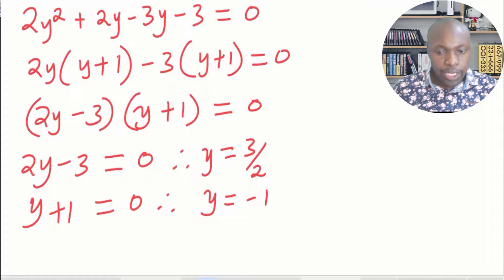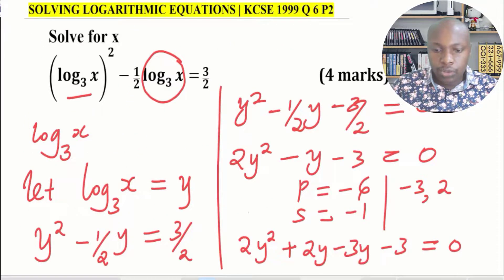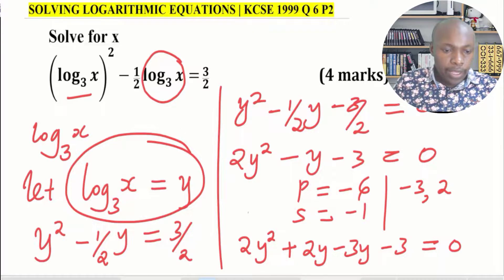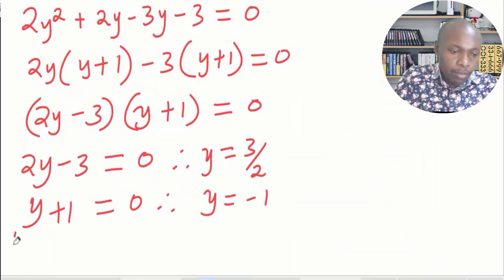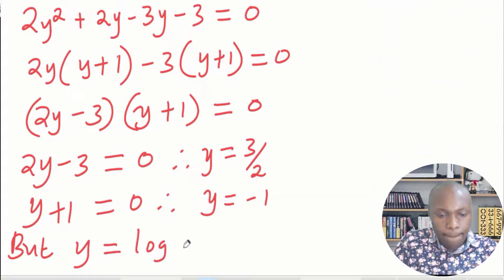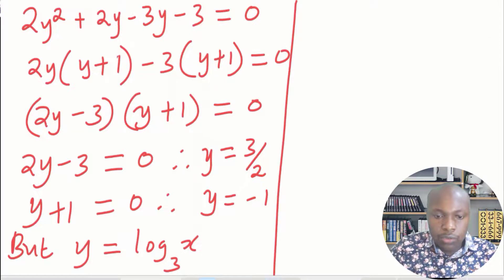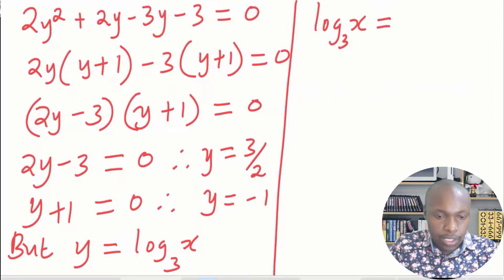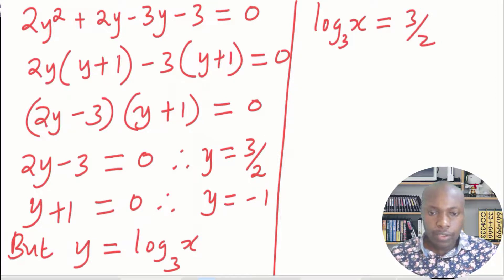Now after obtaining y, remember what we let y be. We let y equal log x to the base of 3. The first value of y is 3 over 2, so therefore log x to the base of 3 equals 3 over 2. This gives us the first solution.